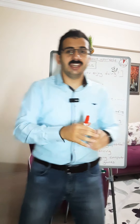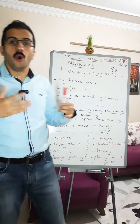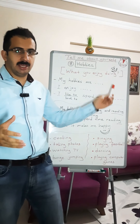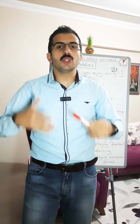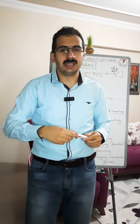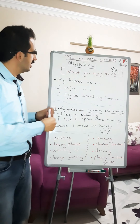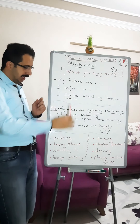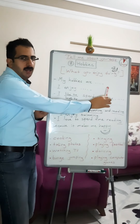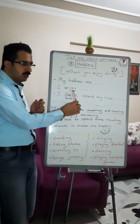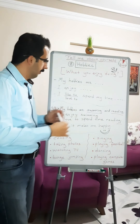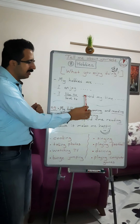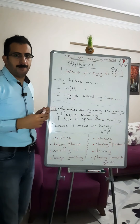The next thing is hobbies. Hobbies are what you enjoy doing, so you might want to talk about your hobbies. Let's look at the explanations. You can say: 'My hobbies are...' or 'I enjoy...' or 'I like to / I love to spend my time...'